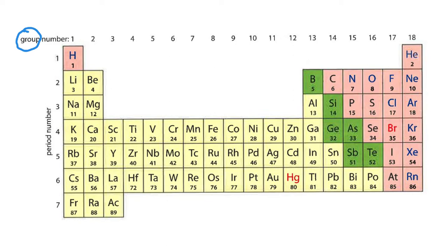Groups are those columns down the periodic table, and as we go across the periodic table we actually number them 1 through 18. So 18 is our last group, 1 is our first group, and they are going down columns.